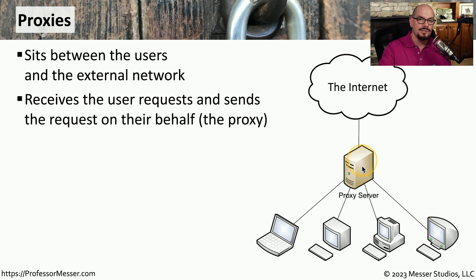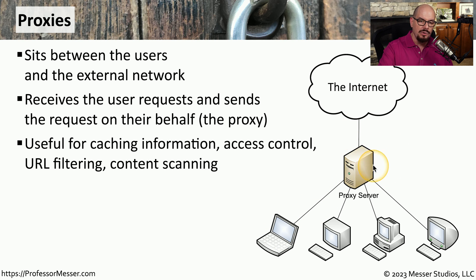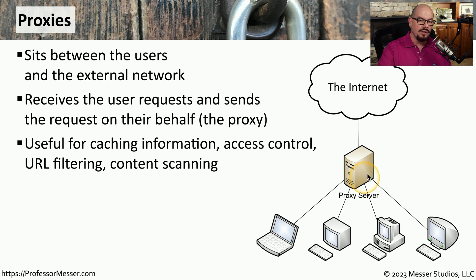The proxy can then make a decision based on what was received on whether that traffic should be forwarded to the user. If everything in that response looks OK, it will send that down to the user's computer. Since this proxy is sitting in the middle of the conversation, we can have it do a lot more than simply provide URL filtering. For example, we could have this proxy act as a cache — if somebody makes a request to an external server, that information can be saved locally on the proxy, and if someone else requests the same web page, the proxy can respond with the cached information instead of making a second request. This proxy can also provide access control, which limits which devices are able to communicate to the internet.